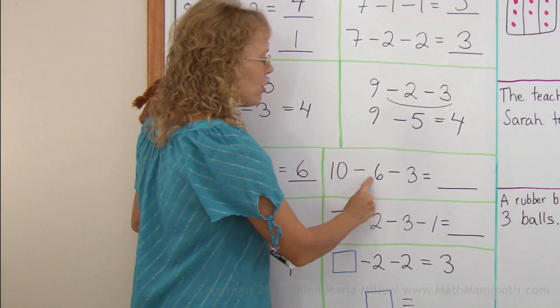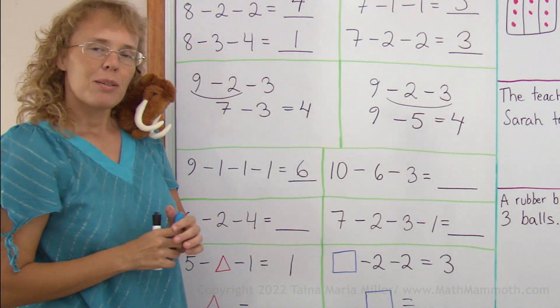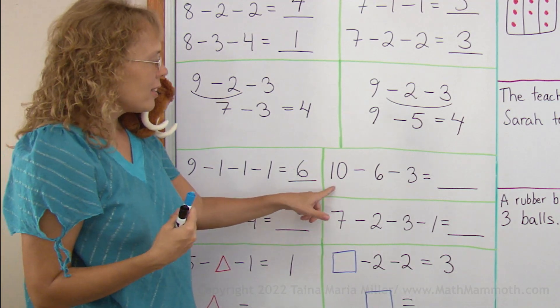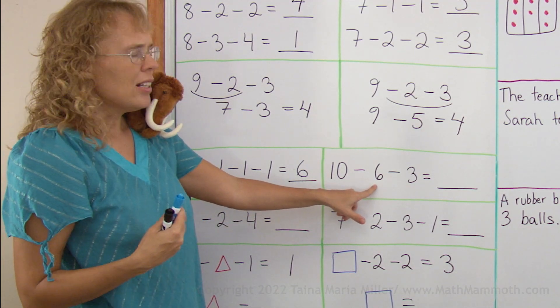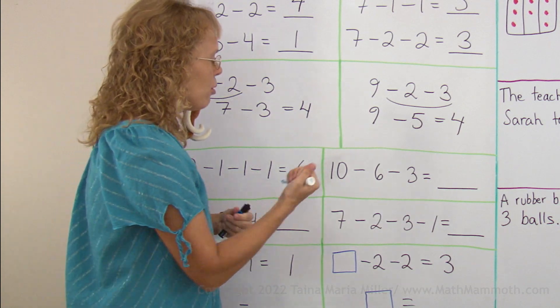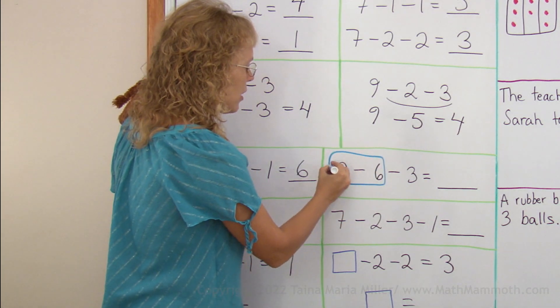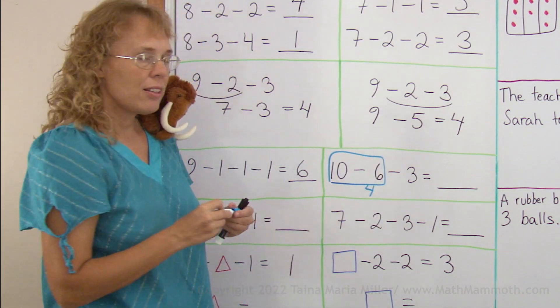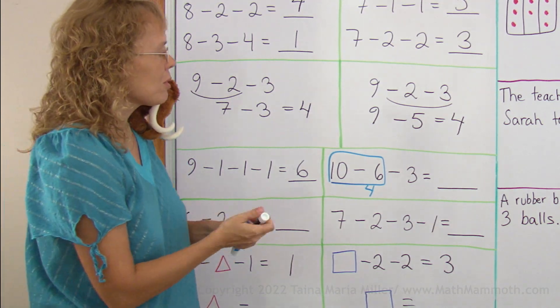Over here, 10 minus 6 minus 3. Maybe you want to try the other way. 10 minus 6, that would be 4. Okay, if you do this first, 10 minus 6, you get 4 and then 4 minus 3 equals 1.